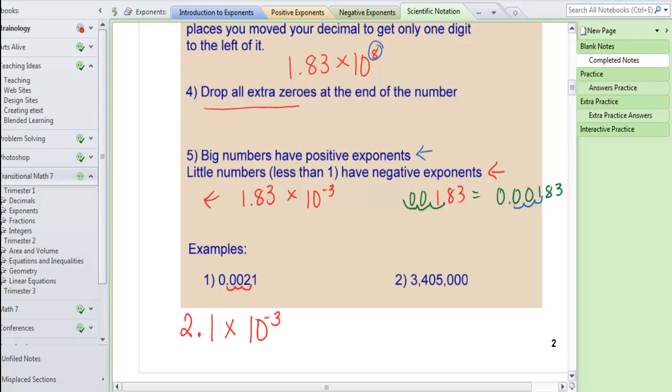And it's going to be a negative because 2.1 is actually bigger than .0021. So when we multiply by a power of 10, we want it to become smaller to get back to its original state.